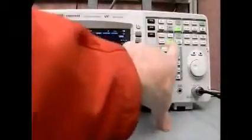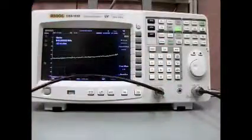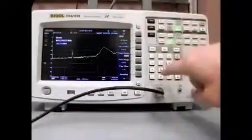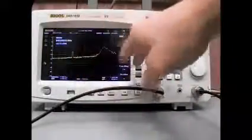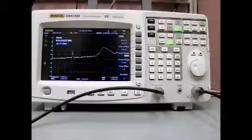And so, again, if we disable the tracking generator, you'll see we'll go back to flat, and I'll enable the tracking generator. Again, this is the characterization over spectrum of that particular filter that we're testing.